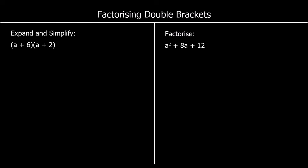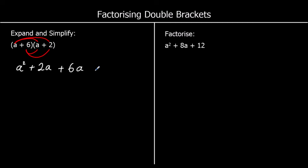Let's look at this first question: expand and simplify. When we expand and simplify, we multiply both of the terms in the first bracket by both of the terms in the second bracket. So we do a times a, which gets us a squared, a times 2, which is 2a, 6 times a, which is 6a, and 6 times 2, which is 12. We collect like terms and simplify by adding the terms that are the same. So we've got a squared, we've got 2a plus 6a, which makes 8a, and plus 12.